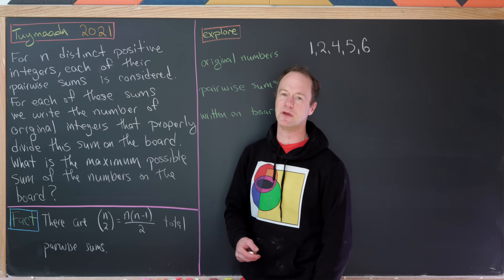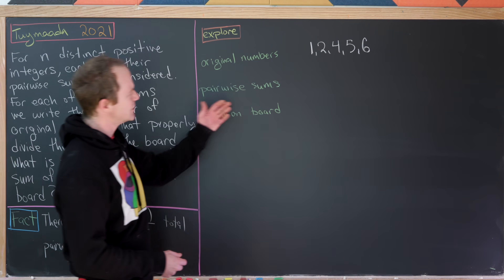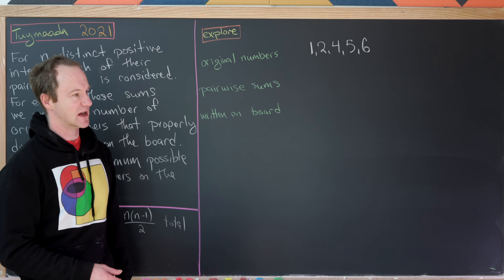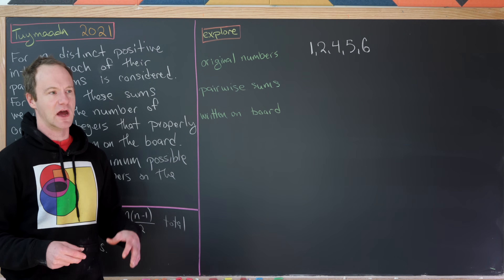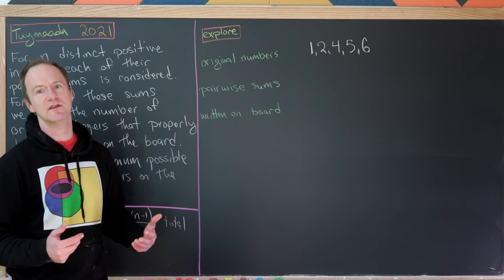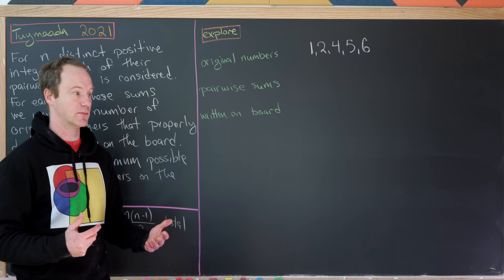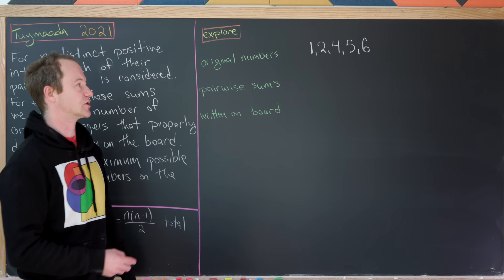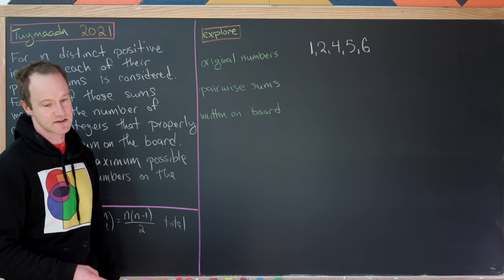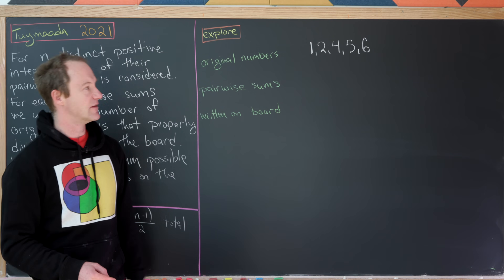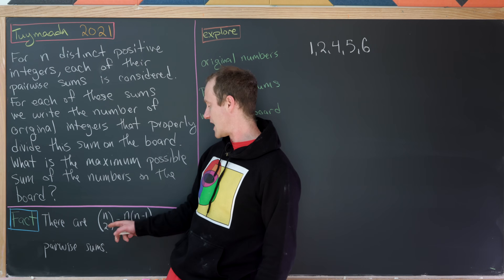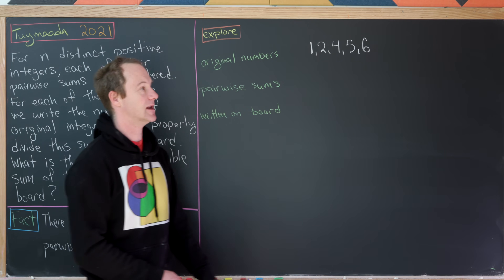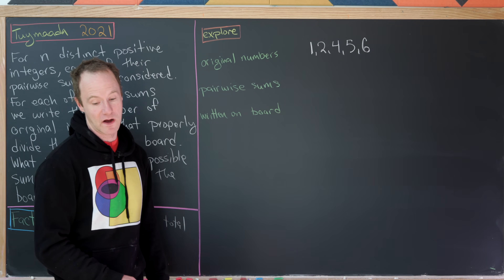Let's do an exploration example first. After this exploration example, we'll maximize this problem and then show that we've achieved that maximum via our example. So let's say our original numbers are 1, 2, 4, 5, 6 — that's 5 total numbers, which means we should have 5 choose 2 pairwise sums. And 5 choose 2 is exactly 10, so we should have 10 pairwise sums.